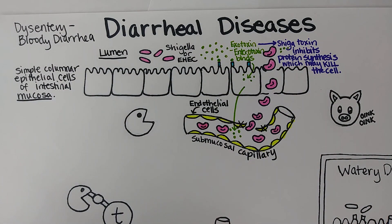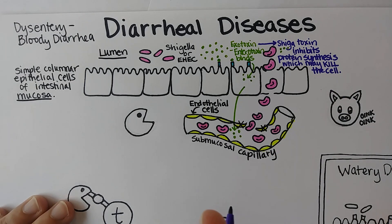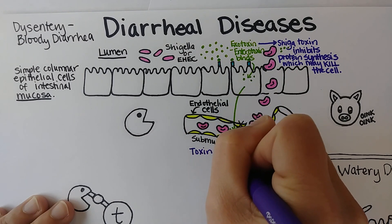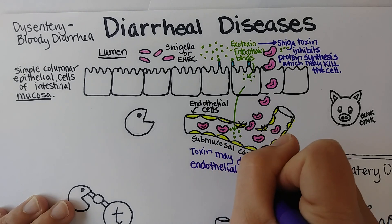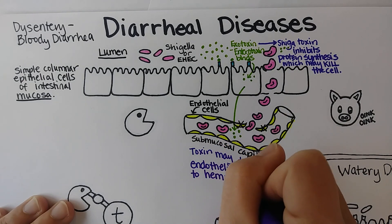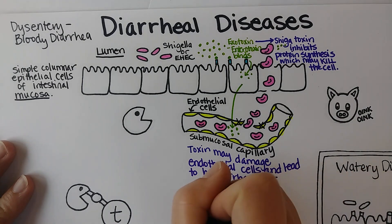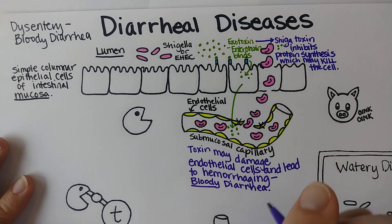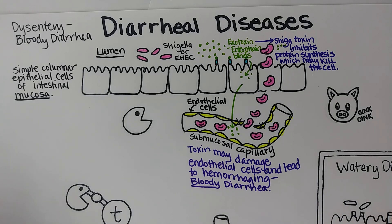Using purple again to note that the toxin may damage the endothelial cells and lead to hemorrhaging — 'hemo' means blood — and that is what causes the bloody diarrhea. When we talk about cholera, which causes white watery diarrhea, you'll notice it is not causing this breakdown of blood vessels with its toxin.